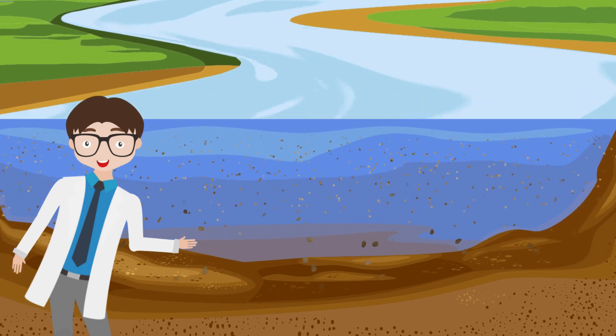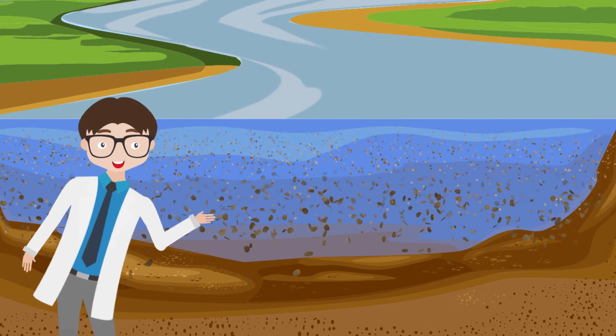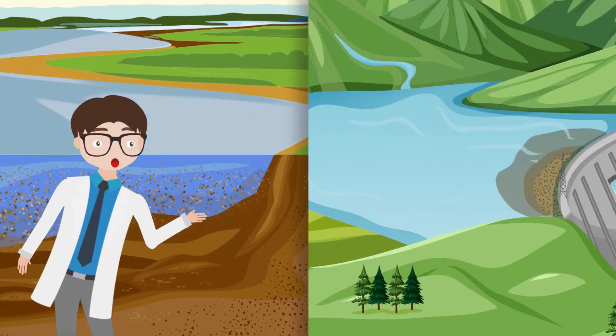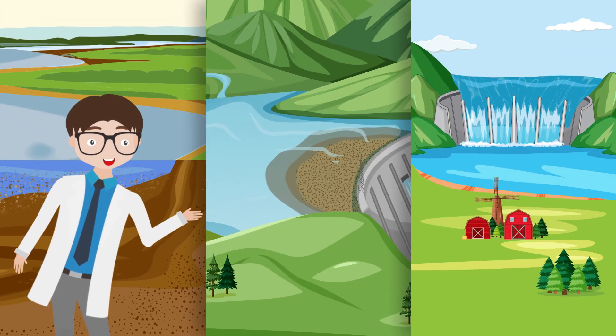But when suspended sediment gets out of balance, big things can happen. Waterways get clogged, reservoirs lose capacity and flood risks rise fast.